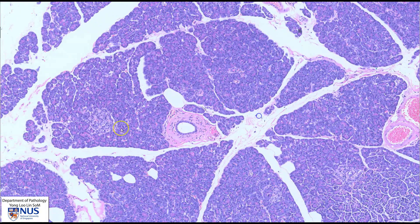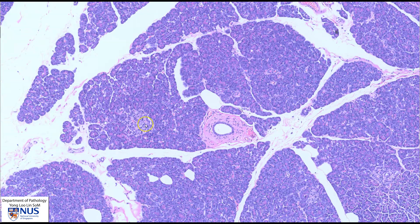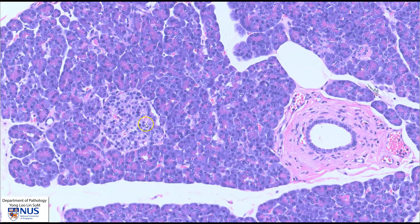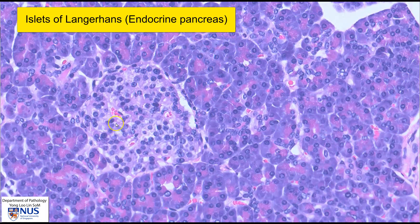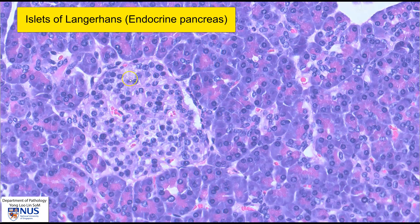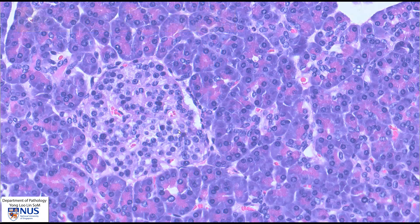We can also see some of these paler nests or islands of cells, and these are the islets of Langerhans, which form the endocrine component of the pancreas.